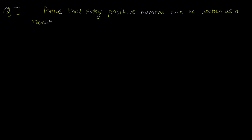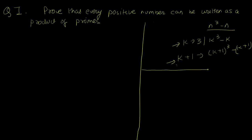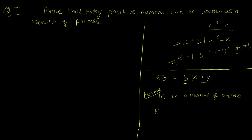Moving on to Problem 1: prove that every positive integer greater than 1 can be written as a product of primes. In yesterday's problem, proving k+1 only required k. Here, if we follow normal induction, we assume k is a product of primes and try to prove k+1 is also a product of primes. The number k+1 can either be prime or composite.